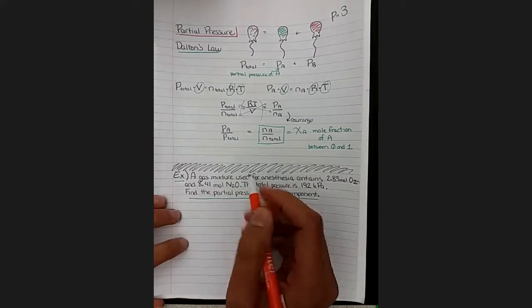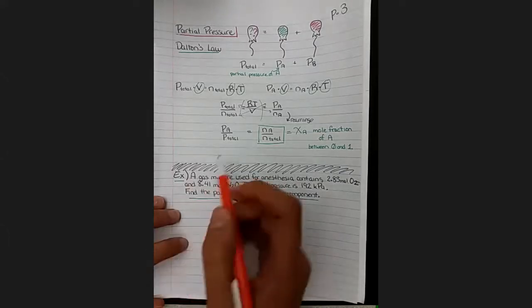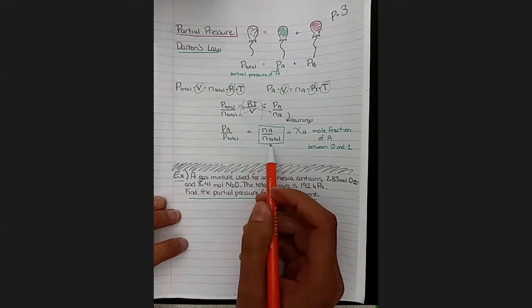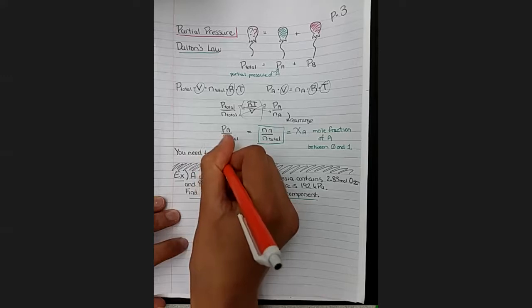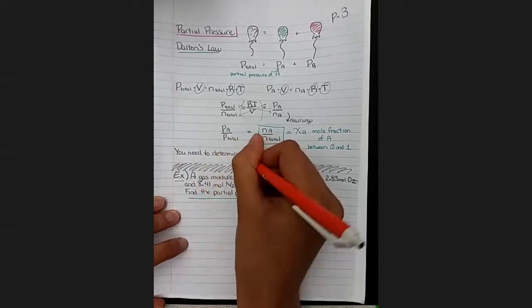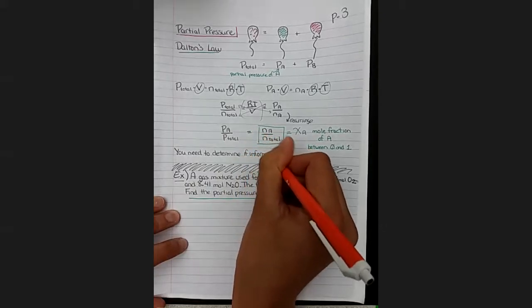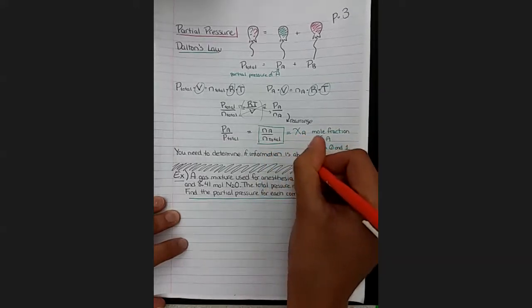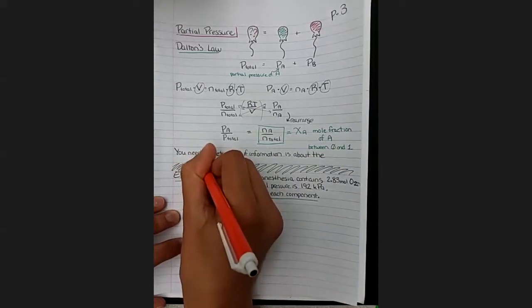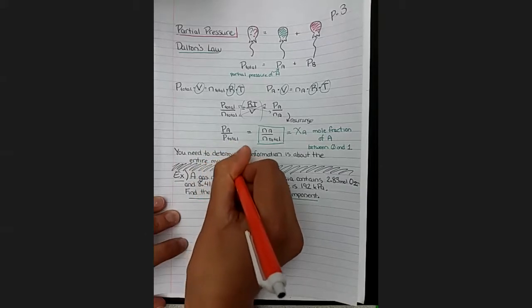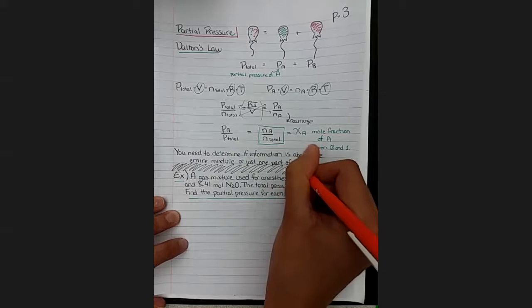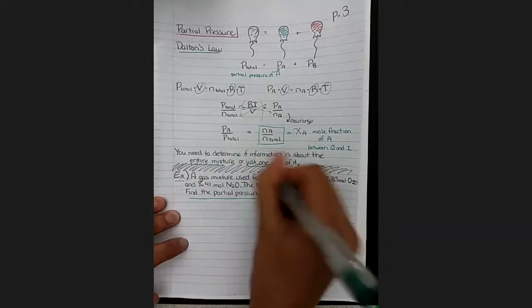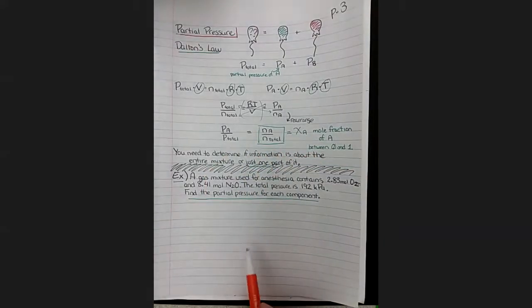These are some of the trickiest problems in this chapter because you have to figure out which of the information you're given is about one particular piece, and which of the information is about the entire container, about the total. So practice problems are going to be your friend for this section. You're going to need to determine when you're given a problem if the information is about the entire mixture with all of the gases in it or just one part.